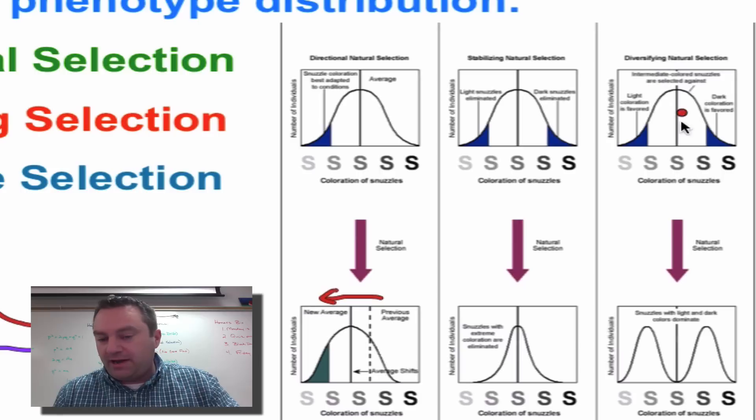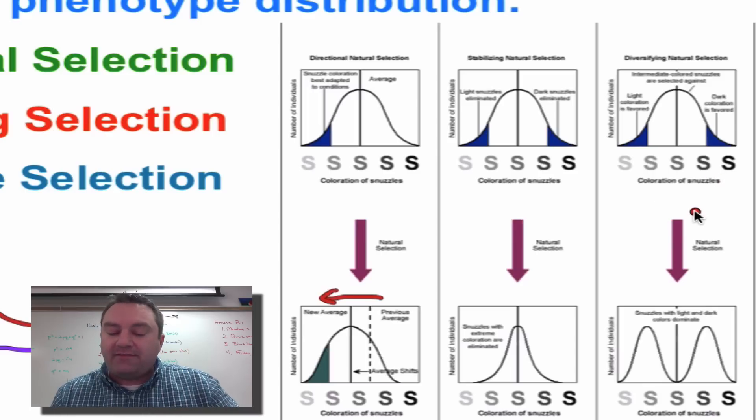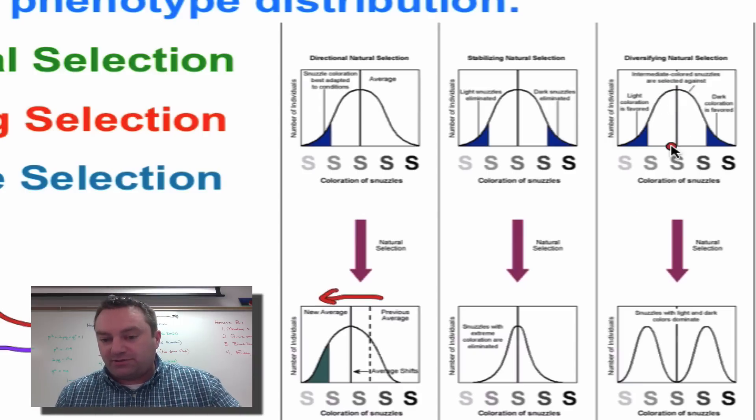And then over here we have the rare one called disruptive or diversifying selection. In this case, both of the extremes have the higher fitness. So dark snuzzles and light snuzzles have a higher fitness rate. The average color snuzzle does not. And this will give you the curve with two humps.